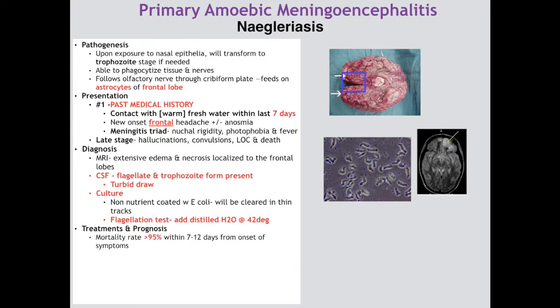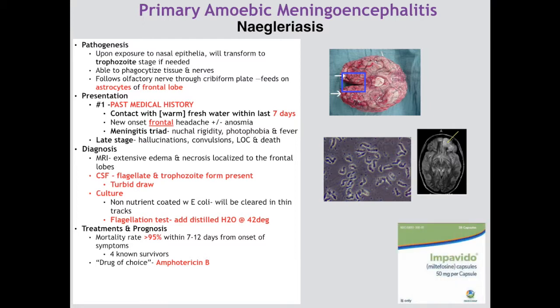For treatment and prognosis: mortality is more than 95% within 7 to 12 days from onset of symptoms, with only four known survivors as of 2018. For Step 1 purposes, the drug of choice is amphotericin B, though there has been little clinical success — it is an antifungal with a lengthy side effect profile and high toxicity risk. In reality, there has been success in one case with therapeutic induced hypothermia. Miltefosine is currently the actual drug of choice, approved by the CDC in 2013 for treatment of primary amoebic meningoencephalitis.